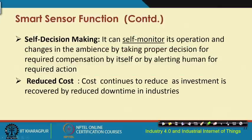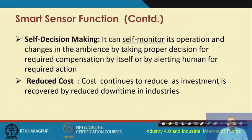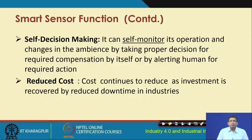The next important function is self decision-making. Because it is a smart, intelligent sensor it has to do things on its own - it can self-monitor and based on the ambient conditions it can make certain decisions on its own, which is possible with the help of the processor inbuilt into the smart sensor. Then you have reduced cost - the most important function of a smart sensor - because if cost is not reduced it is not possible to replicate and scale up to have more copies of these different sensors.